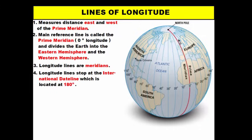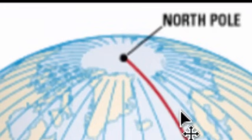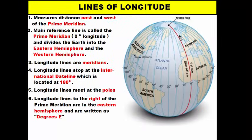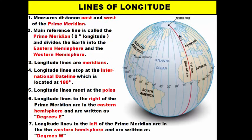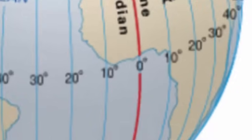Longitude lines are also known as meridians. They stop at the international date line, which we'll cover more when we discuss time zones. Longitude lines meet and intersect at both the north and south poles. When writing longitude coordinates, you must designate degrees east or degrees west, because the prime meridian cuts the earth into western and eastern hemispheres. If you just say 10 degrees, it's unclear whether you're east or west of the prime meridian.